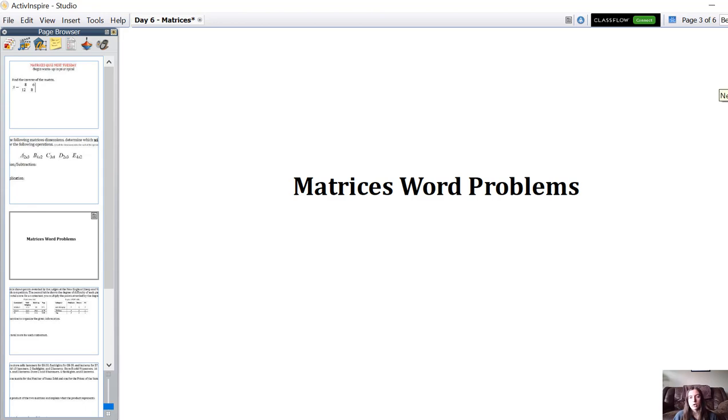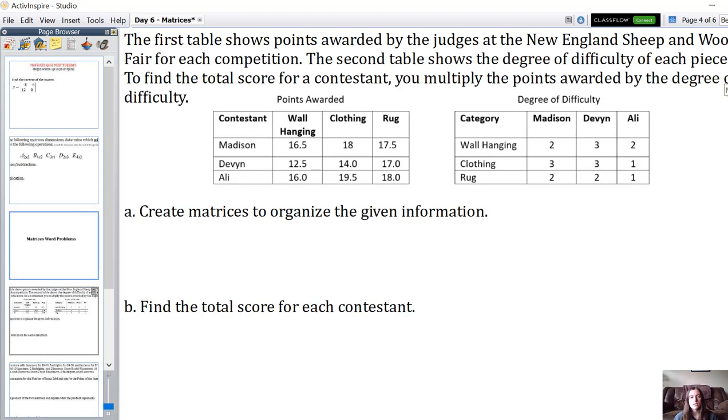Now we're going to use matrices in different word problems. In this first one, the first table shows points awarded by the judges at the New England Sheep and Wool Fair for each competition. The second table shows the degree of difficulty of each piece.